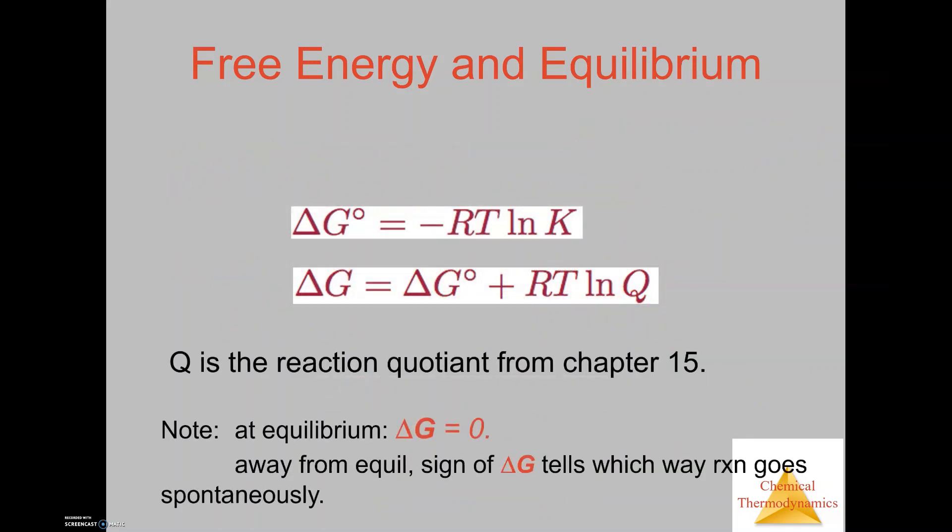If we look at Gibbs free energy under non-standard conditions, the equation is set up a little different. The top equation here is under standard conditions, and the second equation is under non-standard conditions. Non-standard means that you're at a different temperature. Or in respect to Q, Q is the reaction quotient. We learned that in the equilibrium chapter. Q is based off of the equilibrium expression of products over reactants.